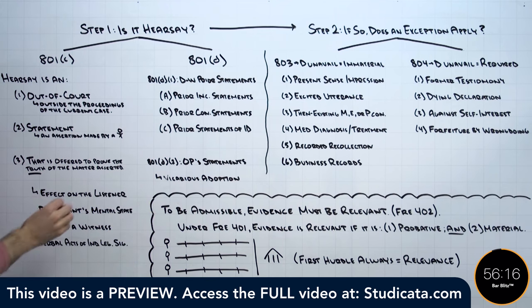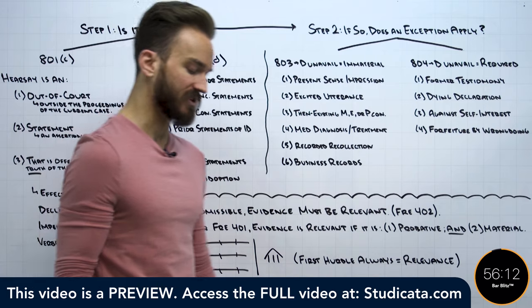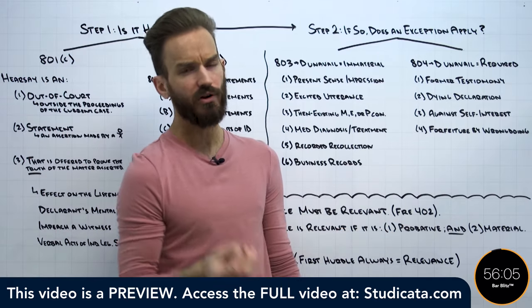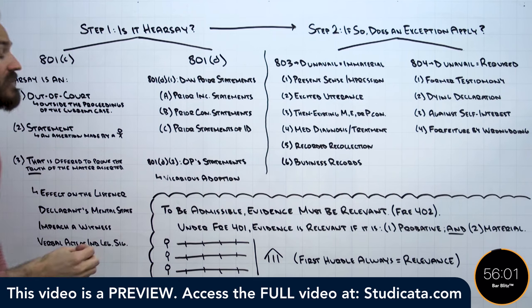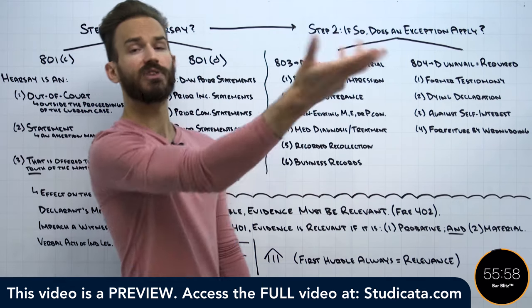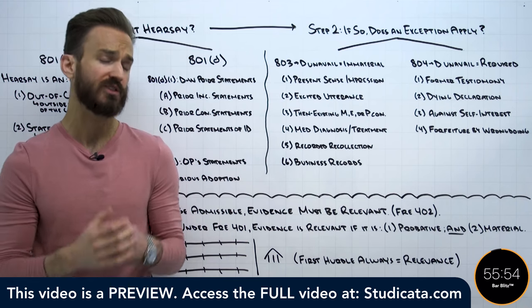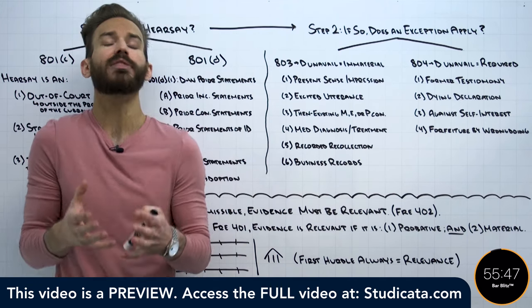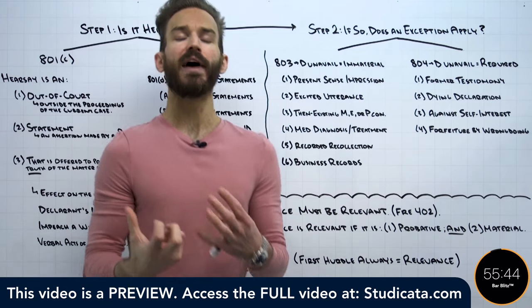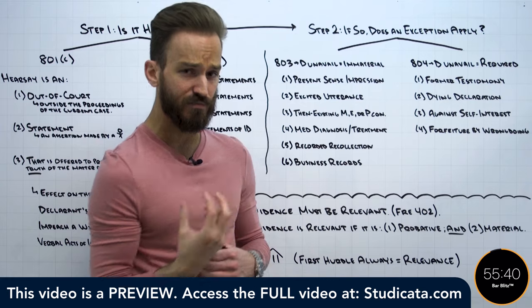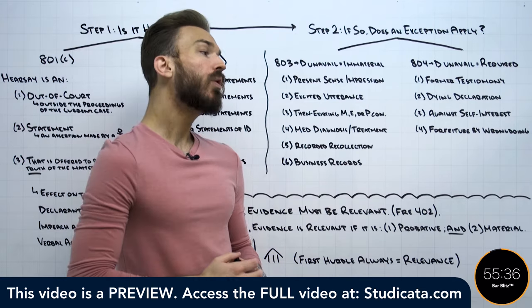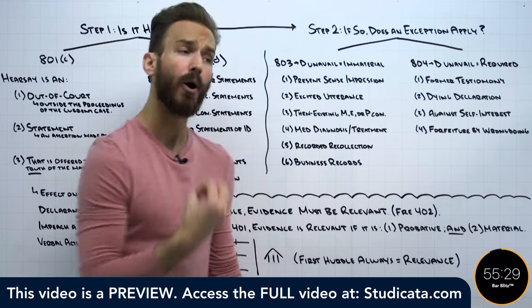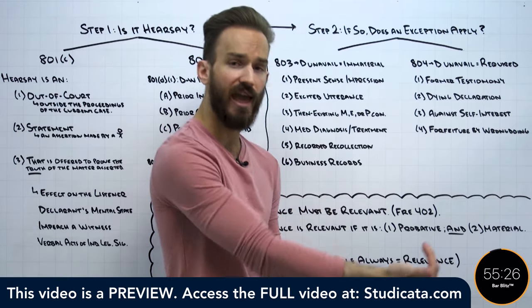Taking a step back, when we think about evidence and the trial process, what is the purpose of evidence? Why do the parties come to court and put forth evidence? The goal of evidence is to help the jury determine the facts of the case. The jury is the fact finder — the jury's job at any trial is to take the evidence and determine what the facts of the case are. Once they determine the facts, they can apply those facts to the instructions they've been given and then render a verdict.